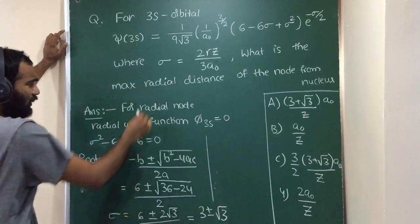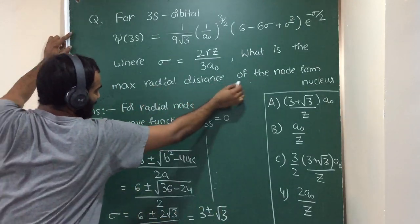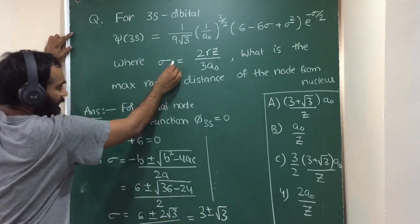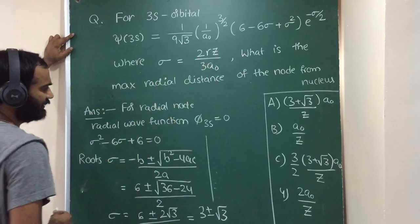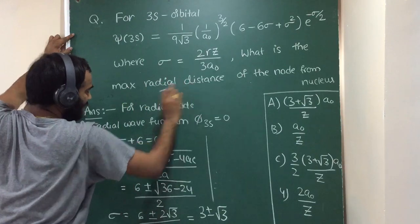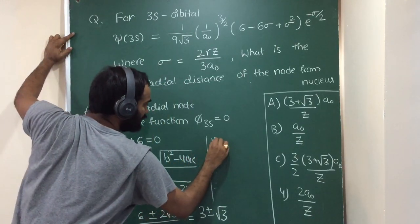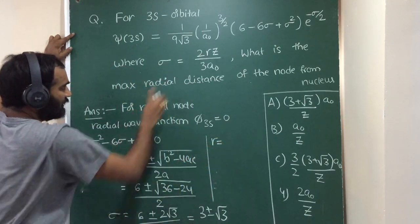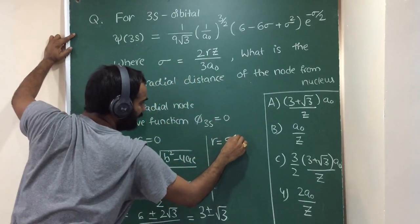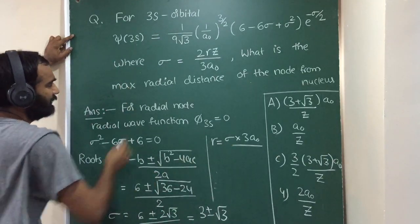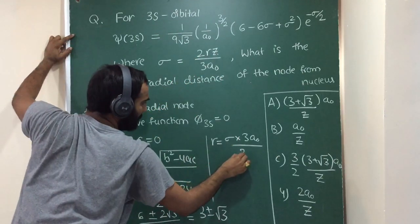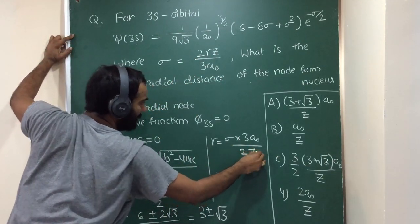Then what is the maximum radial distance of the node? Here sigma equals 2Rz by 3A0. From that, maximum radial distance R equals sigma into 3A0 by 2Z.